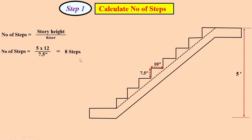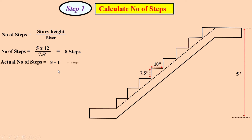Remember that we have a total number of steps of 8, but the last step is parallel to the landing. So for the actual number of steps, we take the total number of steps and subtract one step minus, giving us the actual number of steps.